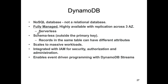DynamoDB is schemeless — you can have records with completely different structures all inside one table, and that's actually encouraged. Every record in a table has to have a primary key of the same type, but apart from the primary key, every other part of a record's structure can differ from one record to the next. It scales automatically — it's built into the way it's designed behind the scenes.